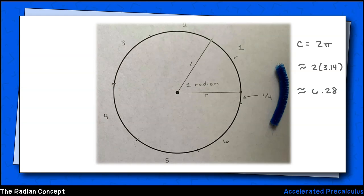Now, if we approximate 2π, that's about 2 times 3.14, which is about 6.28. We were pretty accurate with our visual model.